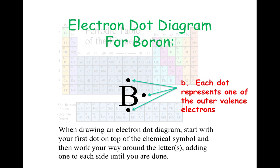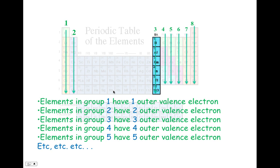For the electron dot diagram for boron, remember that each dot represents one of the outer valence electrons. So if you saw three, you know that it must be in group three. When you draw the electron dot diagram, you always want to start on the top and distribute one on each side as you move around until all the electrons have been distributed.